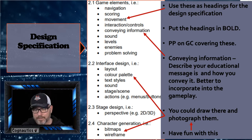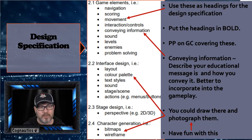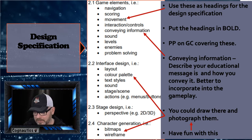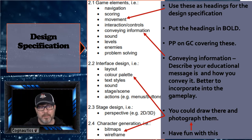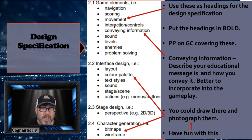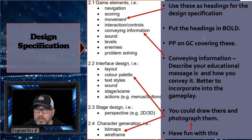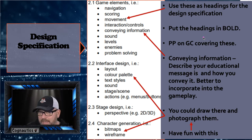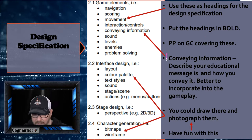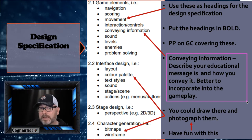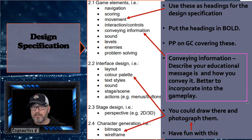The first part is you're going to need to think about the game elements to include, such as navigation — what's going to be the way you navigate in your game — how scoring is going to work, what about movement, interaction, and controls, such as keyboard which you're probably going to be using. How do you convey information? That part is really important because one of the fundamental stipulations of the brief is that you convey some educational information.